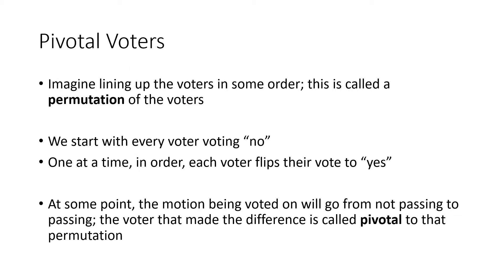The power index we're going to consider involves permutations of voters. A permutation is just an ordering of the voters — imagine your voters as actual people lining up in a specific order. We start with every voter voting no, and then one at a time, in order, we flip each voter's vote from no to yes. At some point the motion goes from not passing to passing, and the voter that made that difference — when we flipped that voter and the motion went from not passing to passing — we say that voter was the pivotal voter for that permutation.